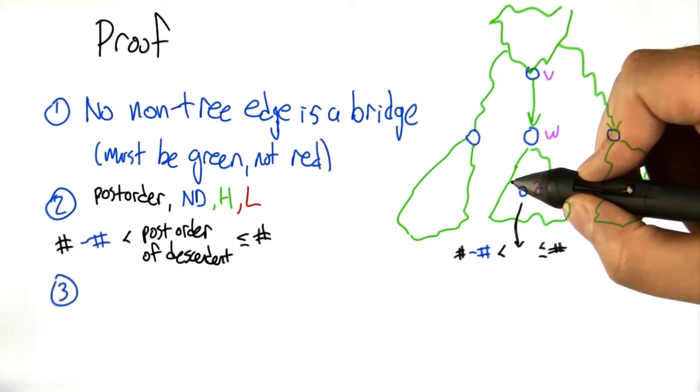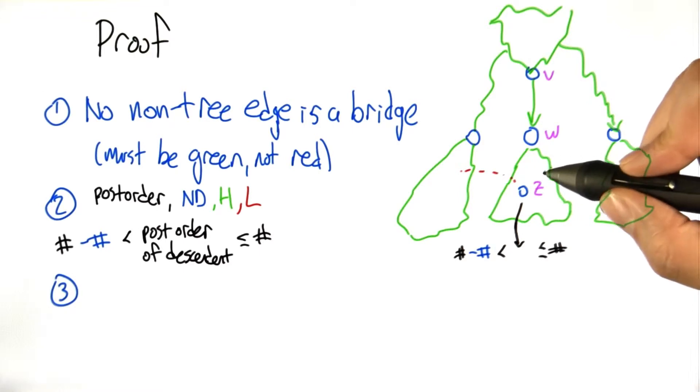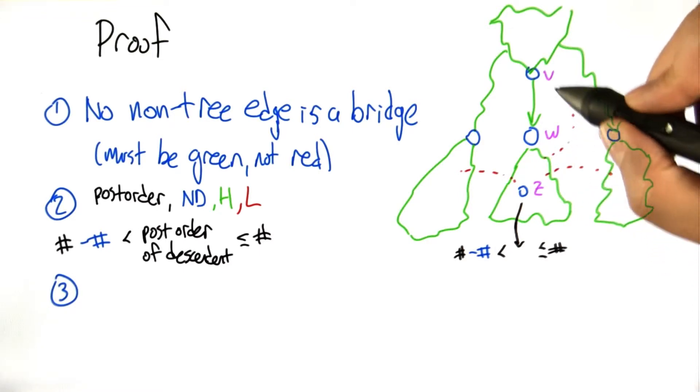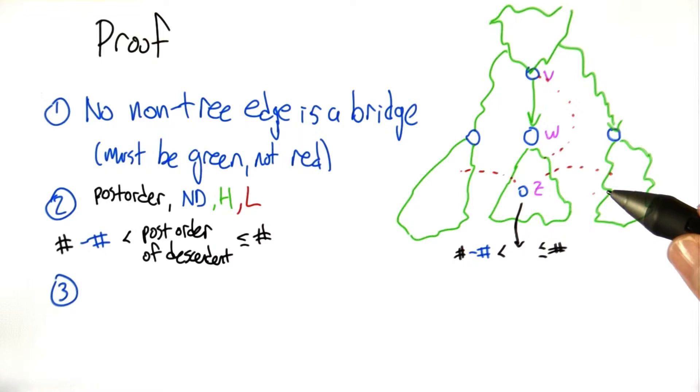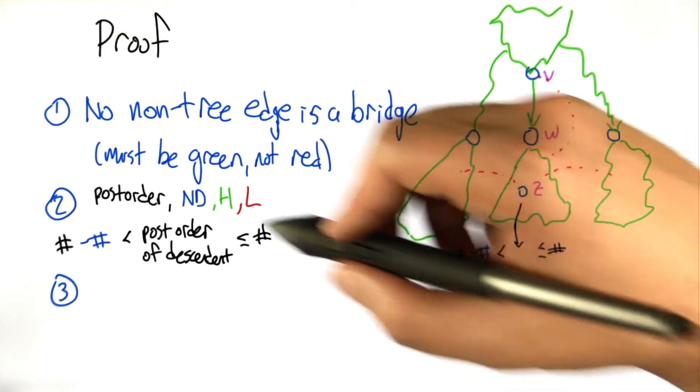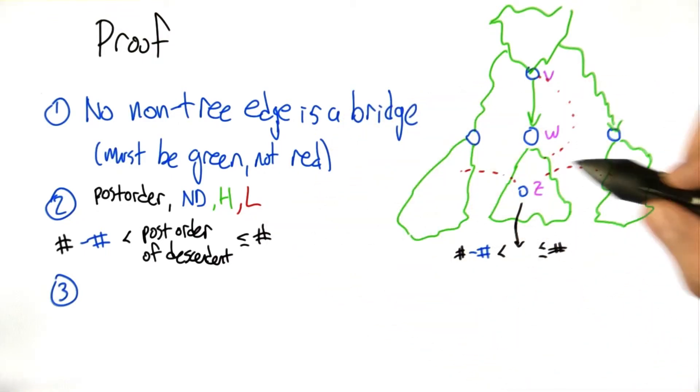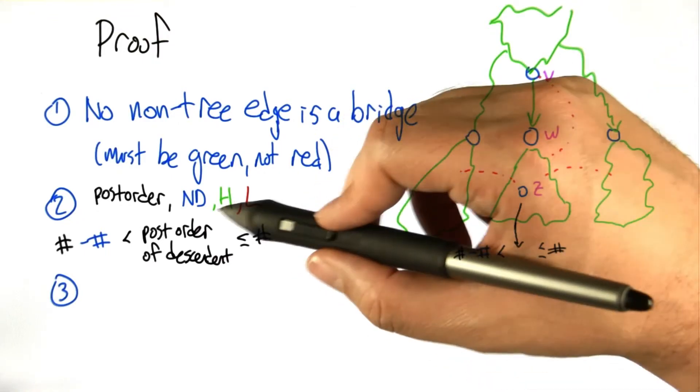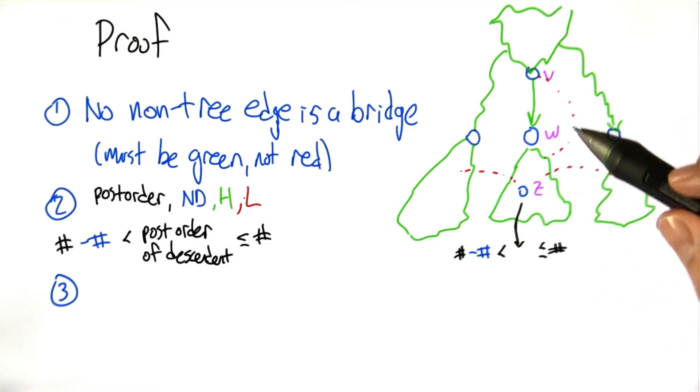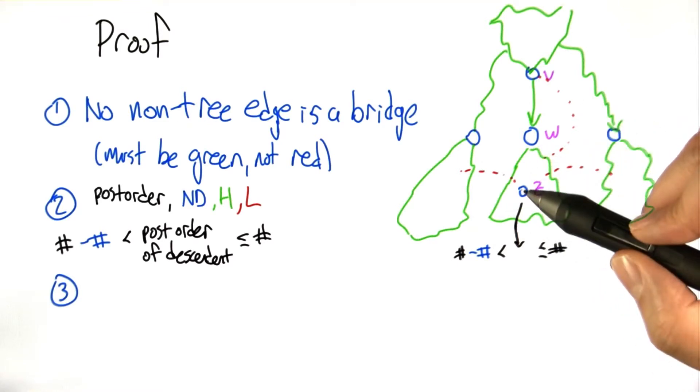The only way that this edge is not a bridge is if there's some non-tree edge that takes us out somehow and connects to something else in the tree. Now what would happen to the h value or the l value if we had one of these edges? Remember, the h value and the l value were defined specifically to be: you follow a bunch of green edges and then you follow one red edge.